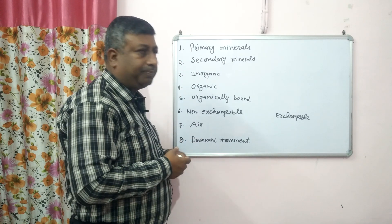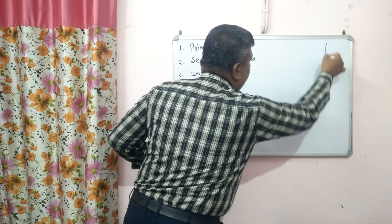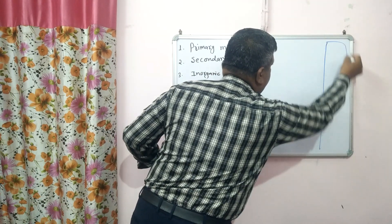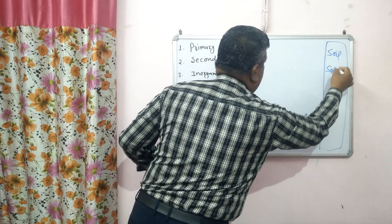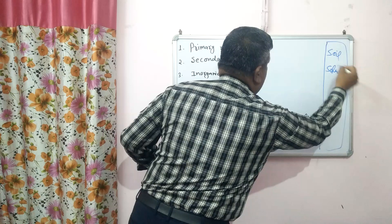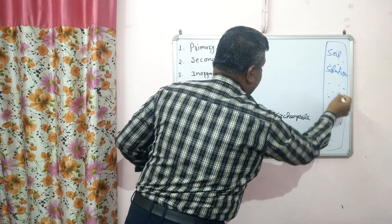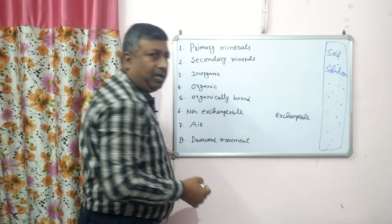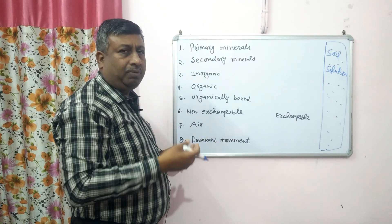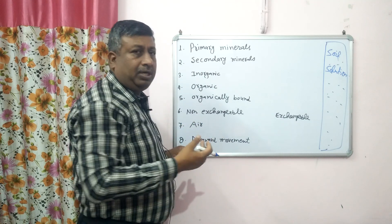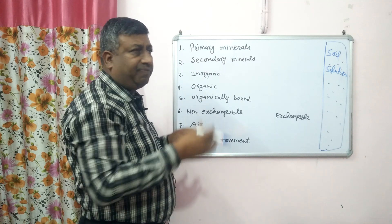There are different processes. Suppose this is the soil solution and nutrients are present in this soil solution. The nutrient is in dynamic form — it is not always in soil solution. It may be converted to organic form, inorganic form, non-exchangeable form, exchangeable form, and may be lost into air or by downward movement. So there are different processes.